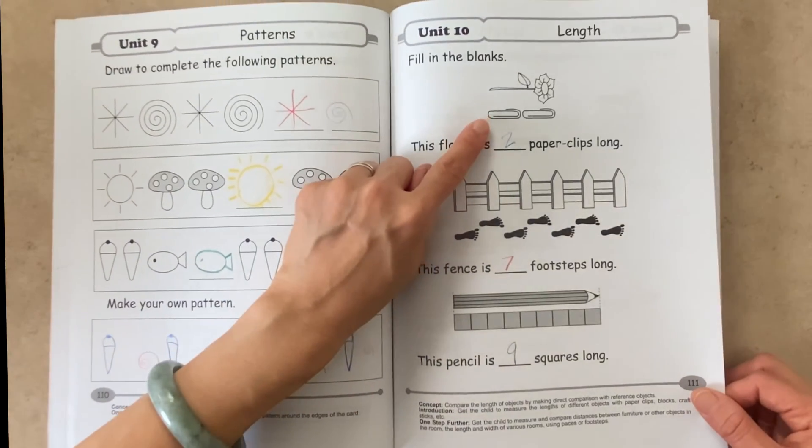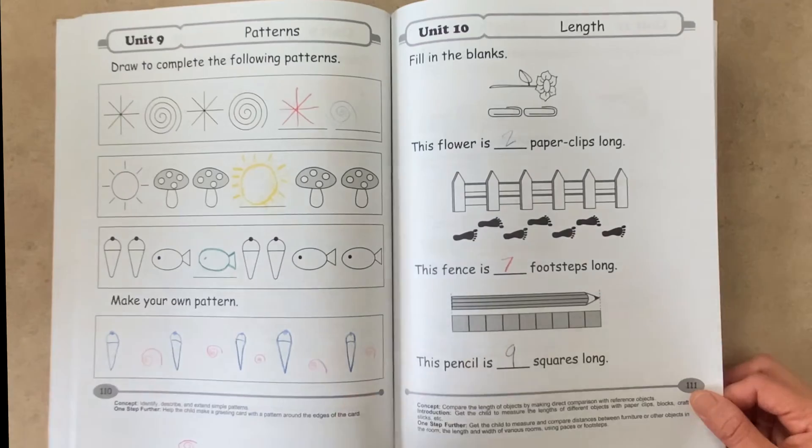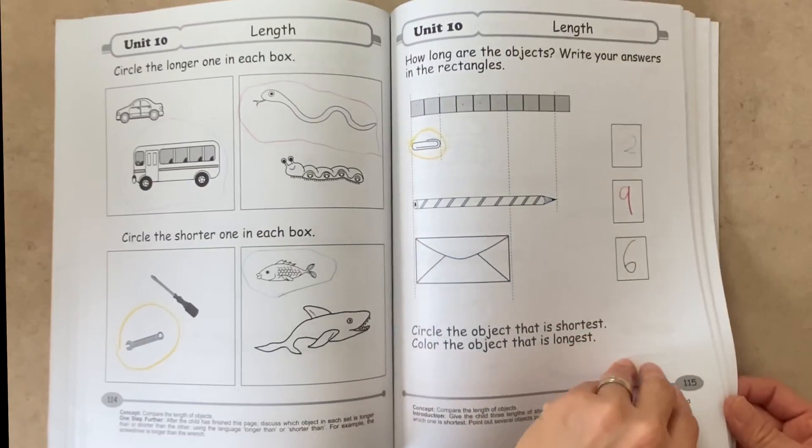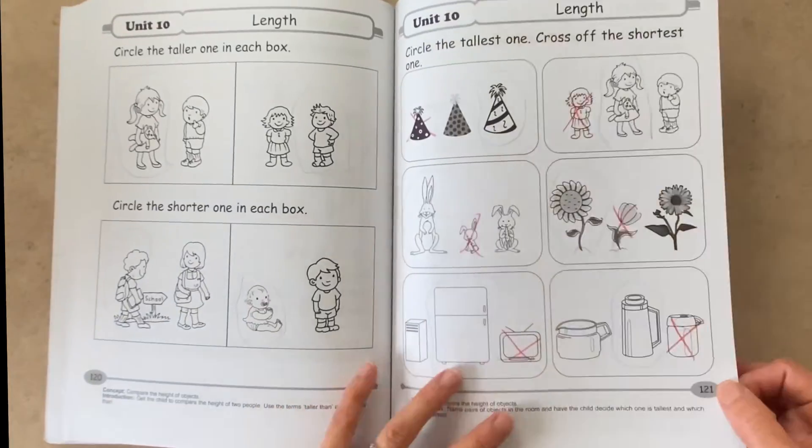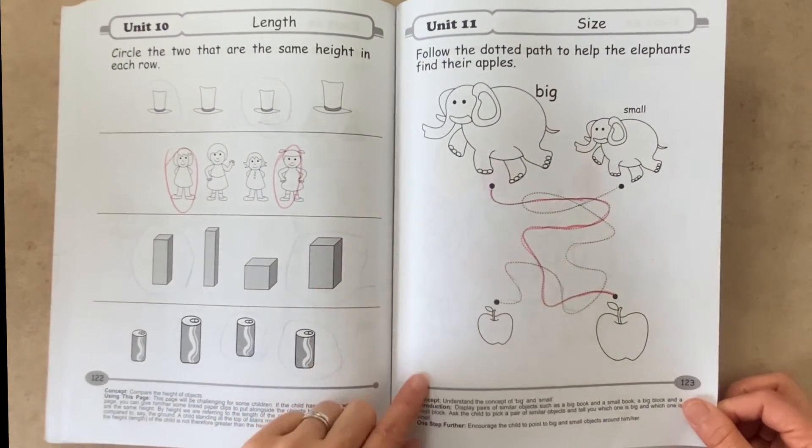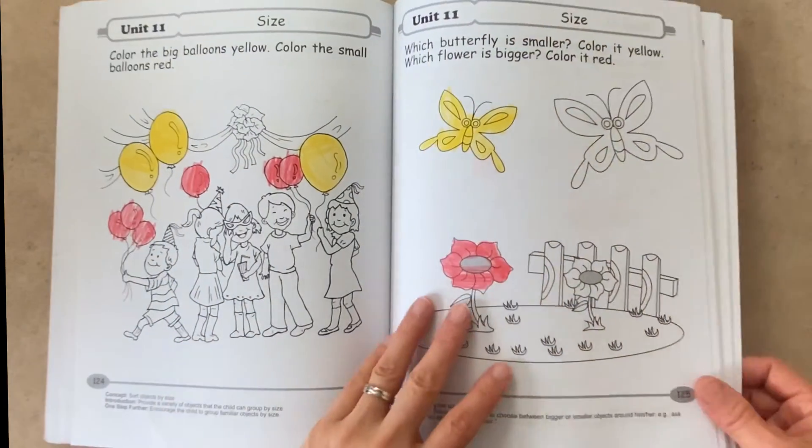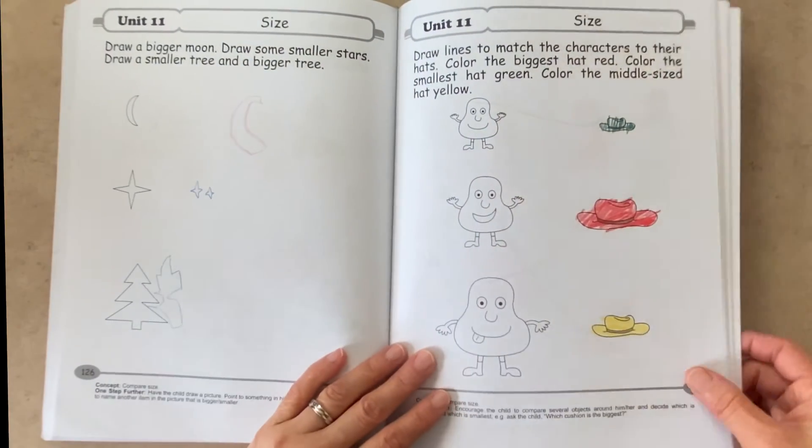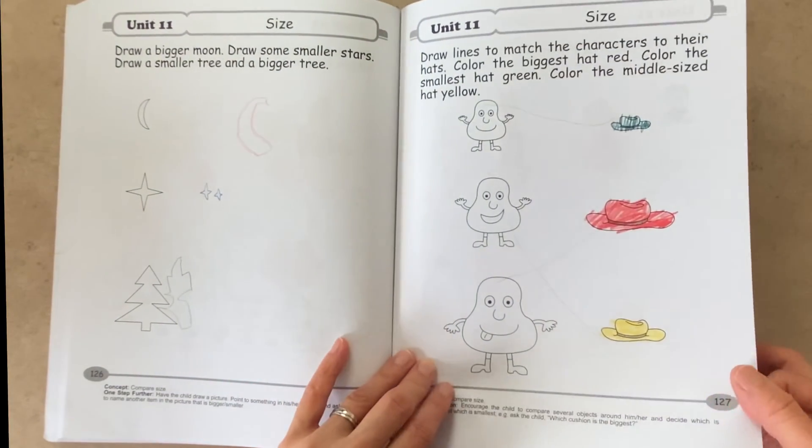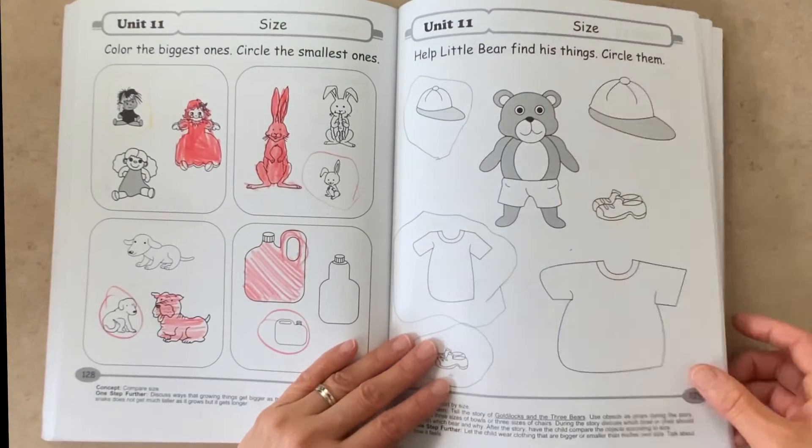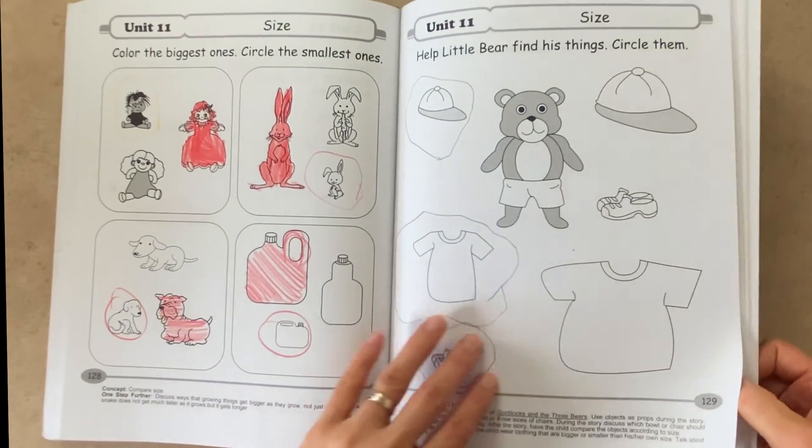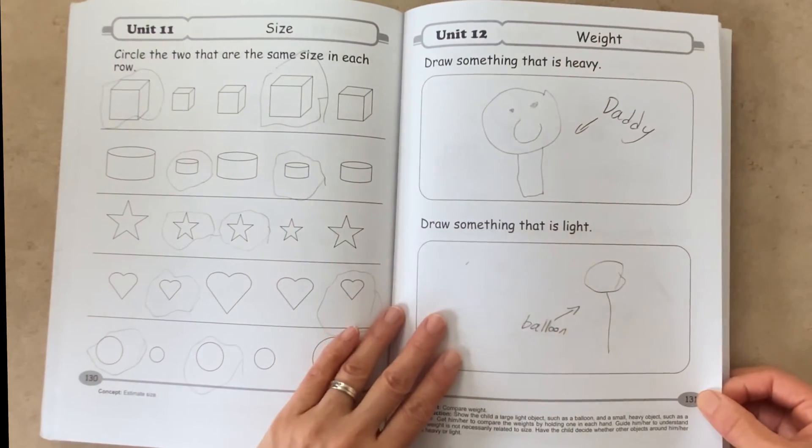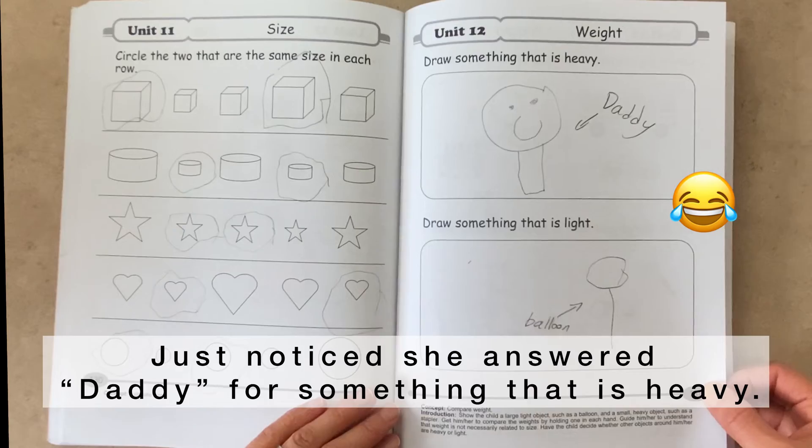Here we're using paper clips to measure, here we're using footprints to measure, and here we're using squares. Unit 11 is about size. Honestly, all of this was actually pretty easy for our kindergartener because she has already been introduced to a lot of these concepts. But she had a lot of fun with them, anyway. And here, Unit 12 is about weight. So figuring out what is light and what is heavy.